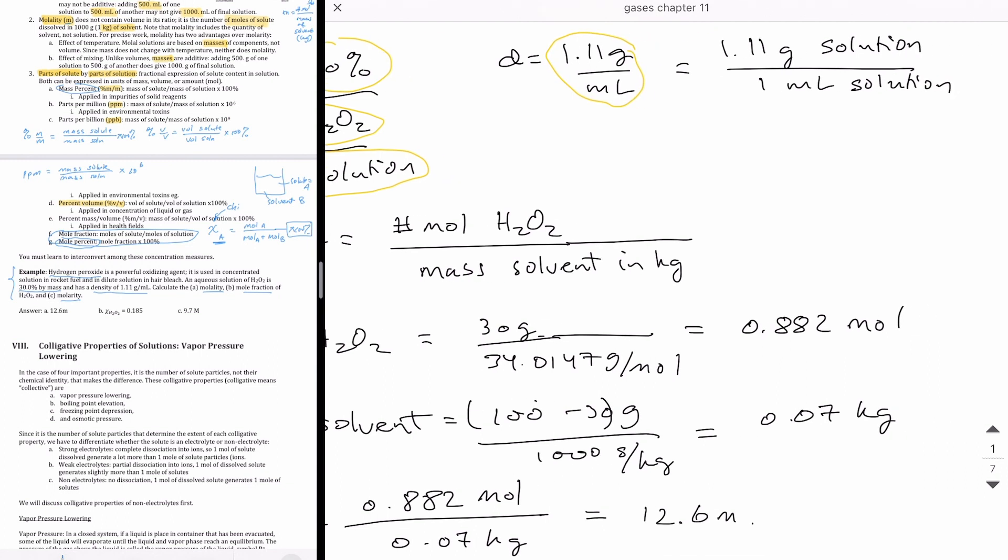Sometimes students misunderstand what density means. Going back to the definition that you learn in general chemistry one, density just means the mass of the substance divided by the volume of the substance. So everything is about the substance itself. Since we're talking about density of a solution, this really means 1.11 grams of solution over one milliliter of solution.